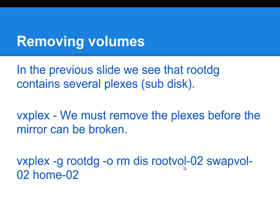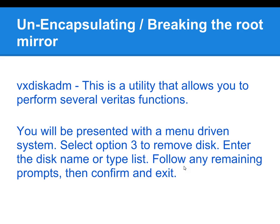Also keep in mind that there was an online spare that will be removed as well, but it won't be reflected in the slides. After the plexes have been removed for RootDG02, we want to use the VxDiskADM command. We select Option 3 to remove the disc, and that disc is going to be RootDG02. You could select the option to list the discs to confirm that RootDG02 is there, and then simply select the option to remove it. Follow all the necessary prompts, confirm, and exit that menu system.